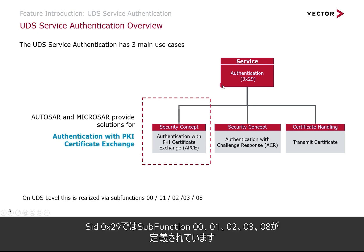For UDS experts among you, on UDS level those are service 29 with sub-functions 0, 1, 2, 3, and 8.